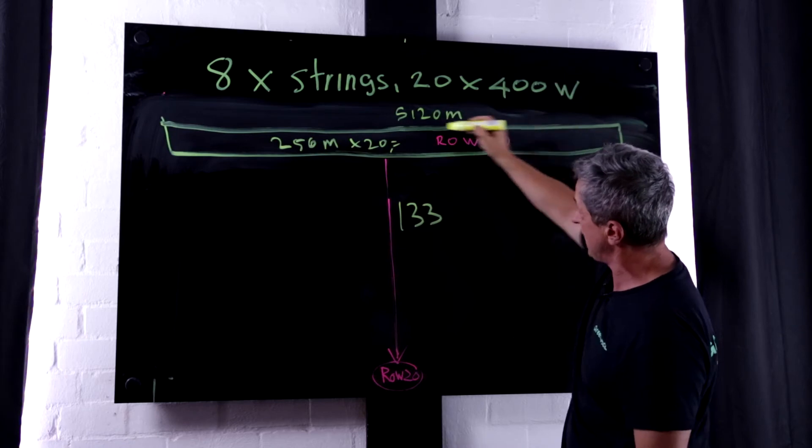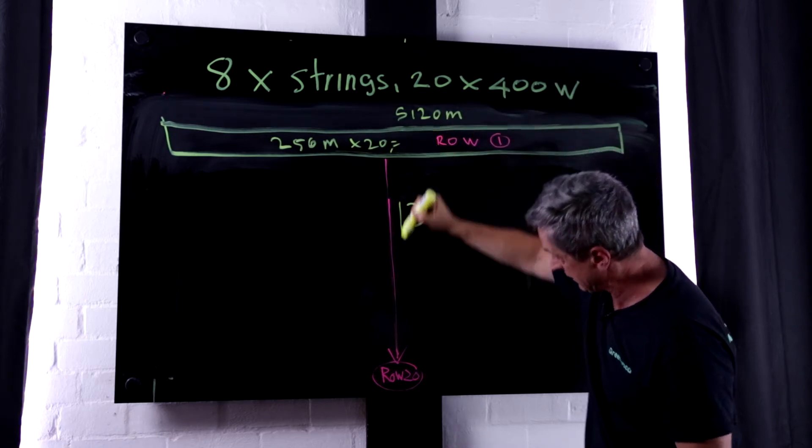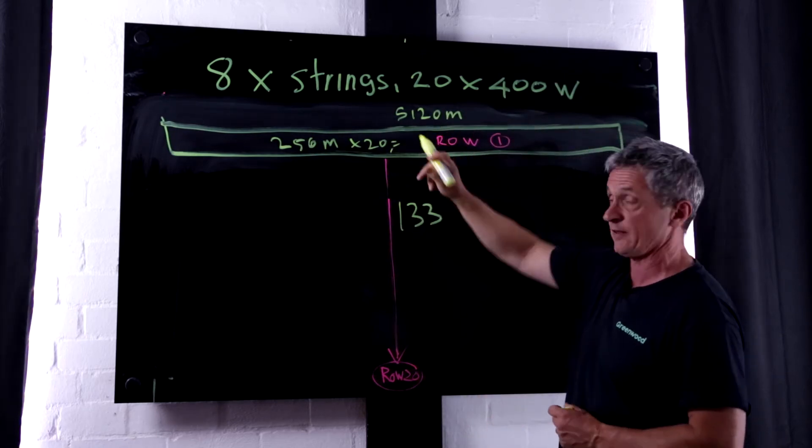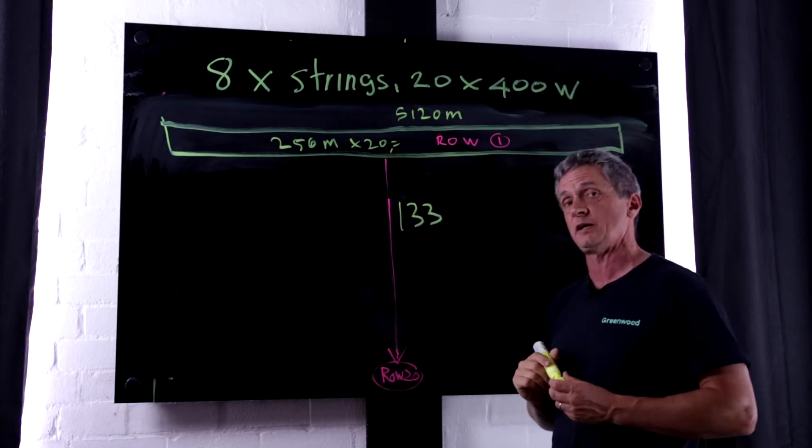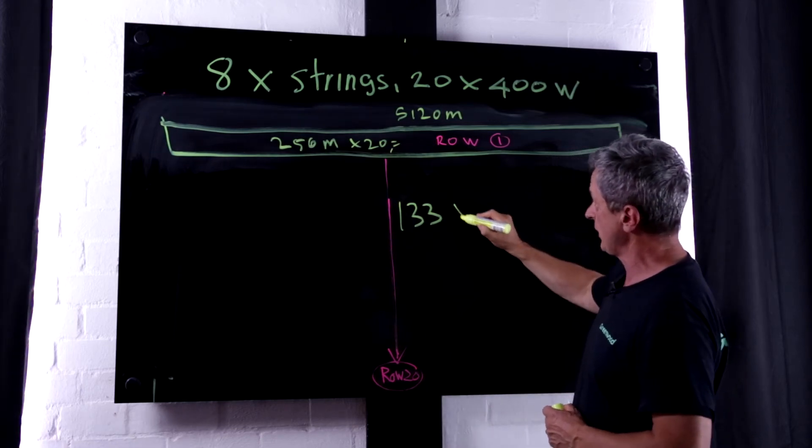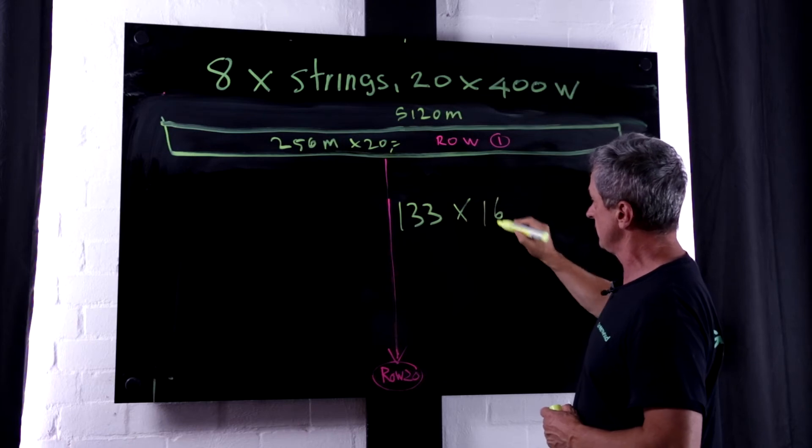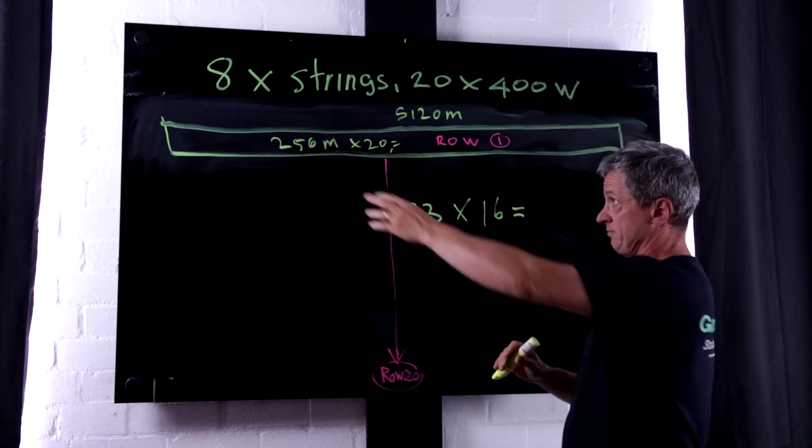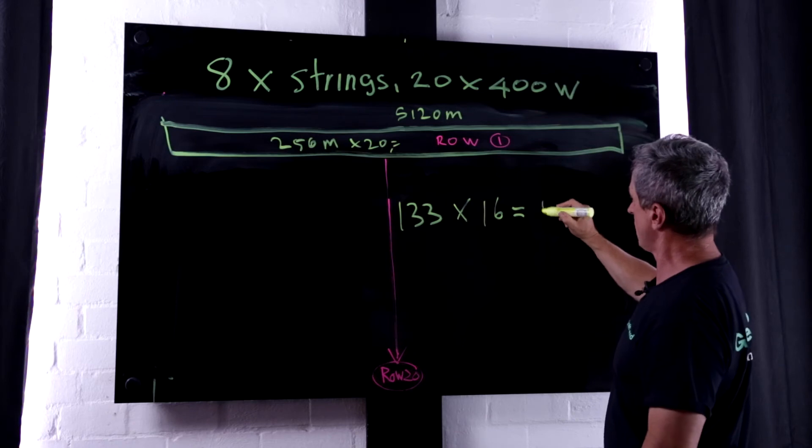But now, we are bringing all the cables to the centre of each row, and there's a run down to the inverter station. Now the furthest run is 133 metres. So we have 133 metres times 16 cables, because there's eight strings, for row one.